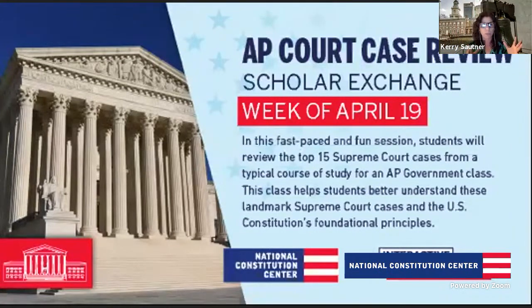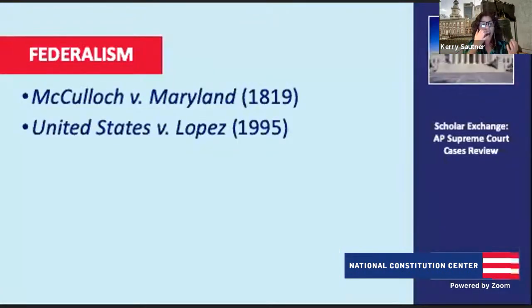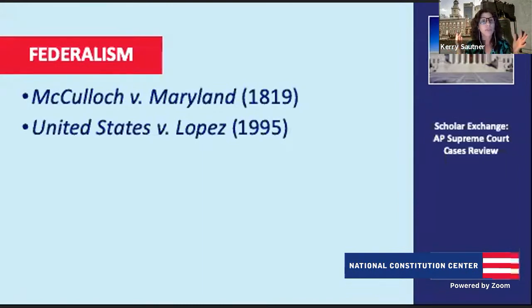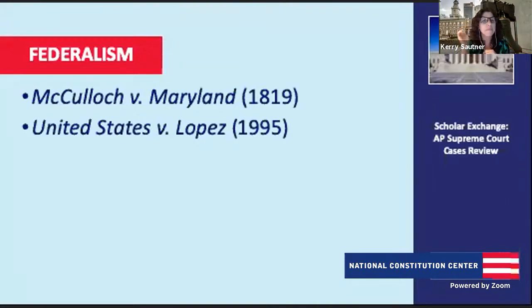These cases are in six different groupings. The first grouping is about court cases that have to do with federalism. The two court cases in this section are McCulloch v. Maryland and United States v. Lopez. I'd love for you to help the students understand first what federalism is, how these court cases act as bookends to the power of federalism, and how we understand federalism between the branches, between the federal government, the state government, and the individuals.